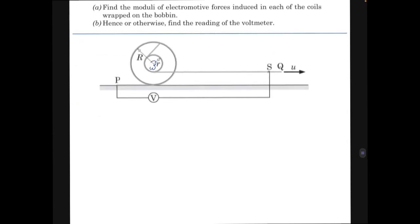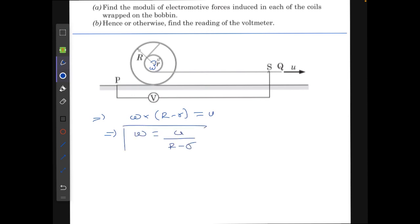In the first part we have to find the electromotive forces in outer coil and the inner coil. First, let us find the omega of this cylinder. The omega can be written as, since there is a no slipping condition, we get omega times capital R minus small r equals to u, so omega equals to u by R minus small r.